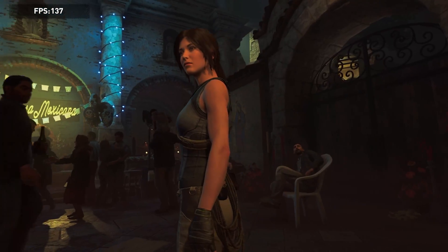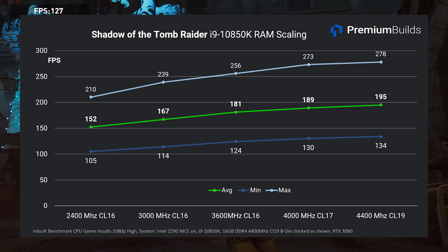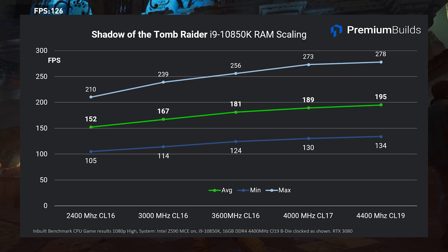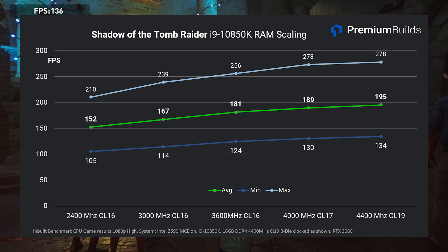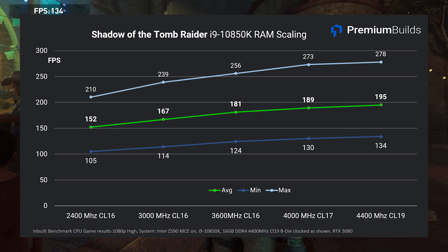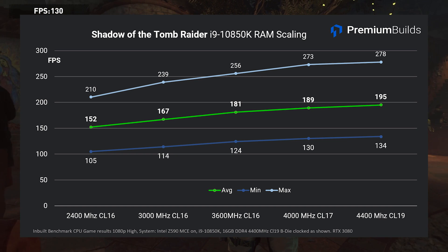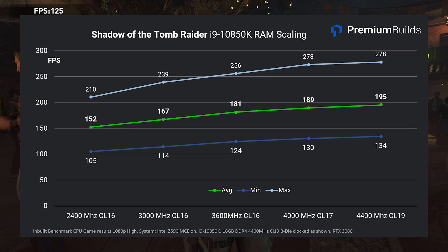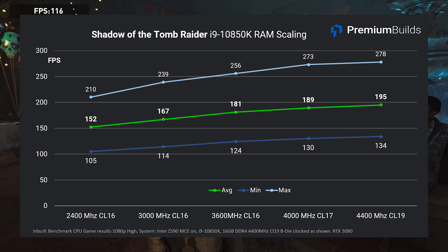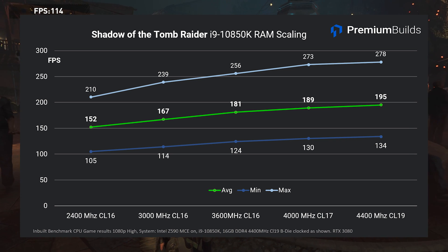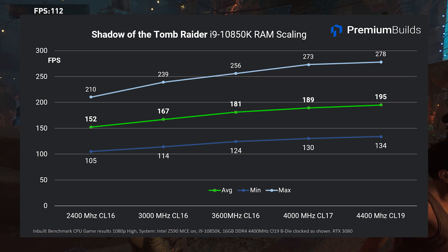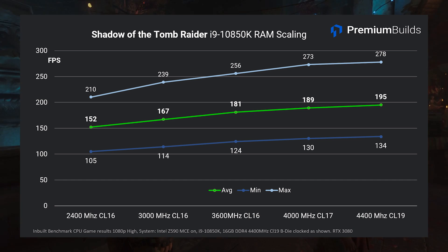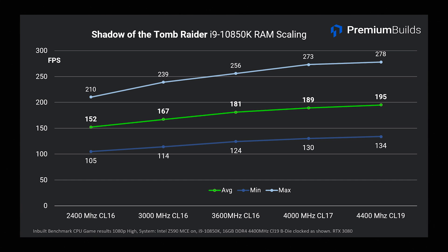Looking first at Shadow of the Tomb Raider on the i9-10850K, you can see how marked the trend is. To be clear, this is the benchmark reported CPU performance independent of the GPU. Moving from 2400MHz CL16 RAM to 3600MHz with all other settings controlled yields a 30fps performance bump. Further increasing speeds to 4000MHz and reducing latency, but by a smaller amount owing to the lift in CL timings to CL17, gives another 4% or 8fps average. At 4400MHz CL19 we see our highest performance at 195fps average. That's 43fps or 28% faster than the base settings.